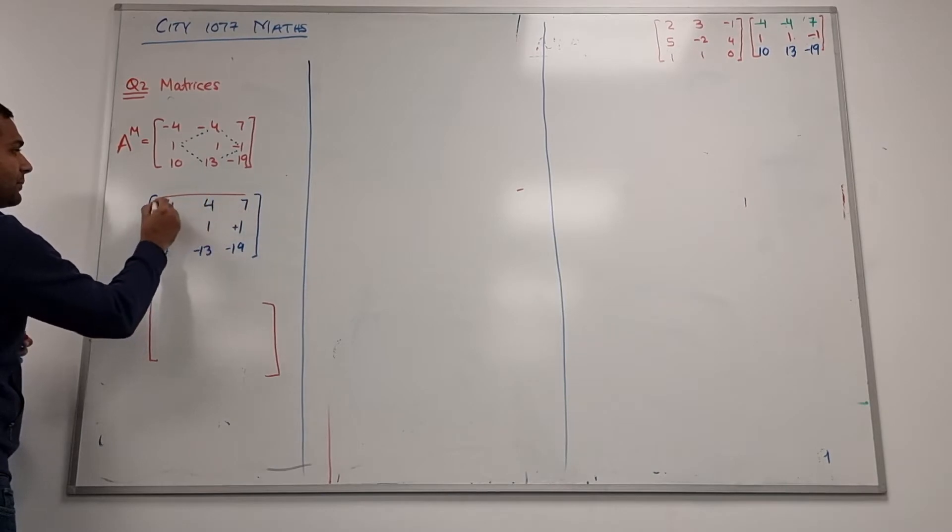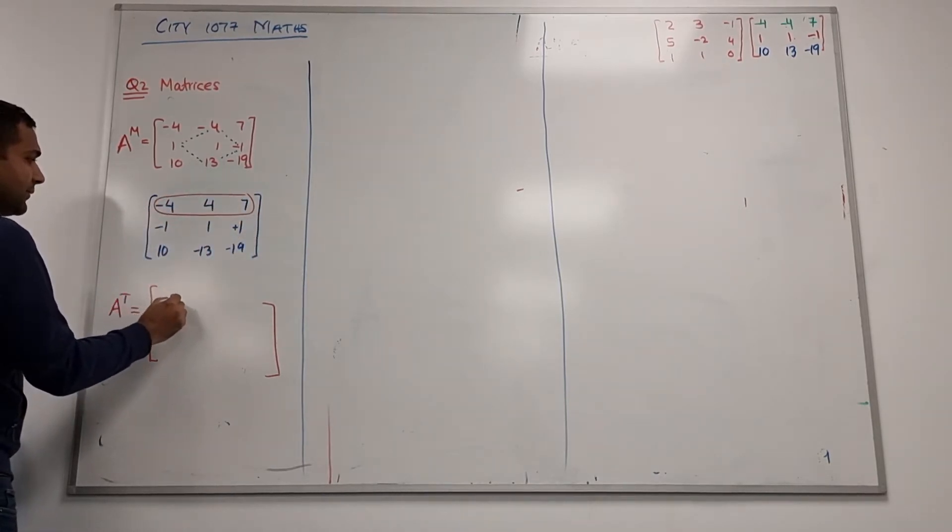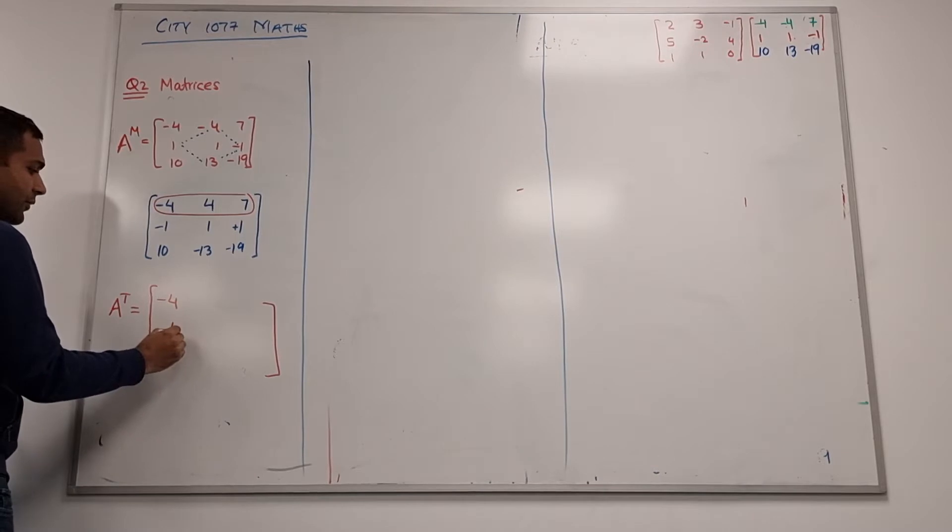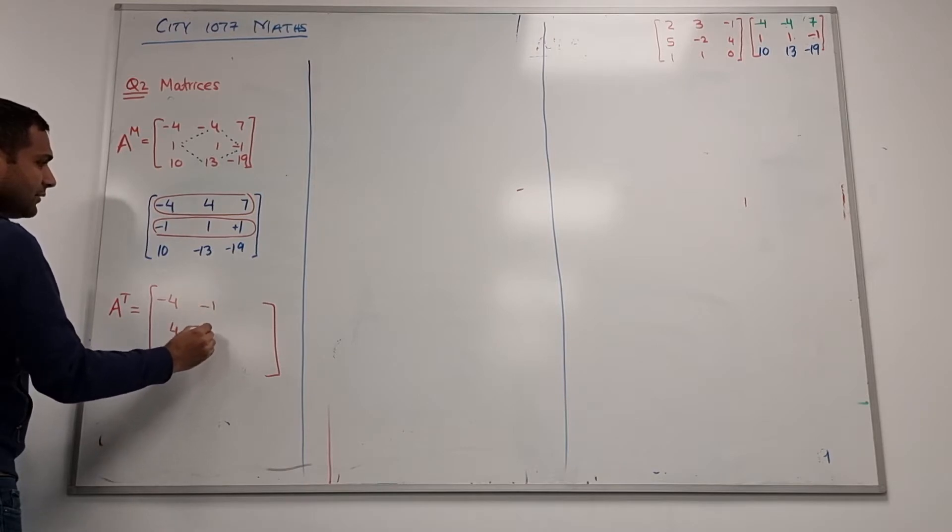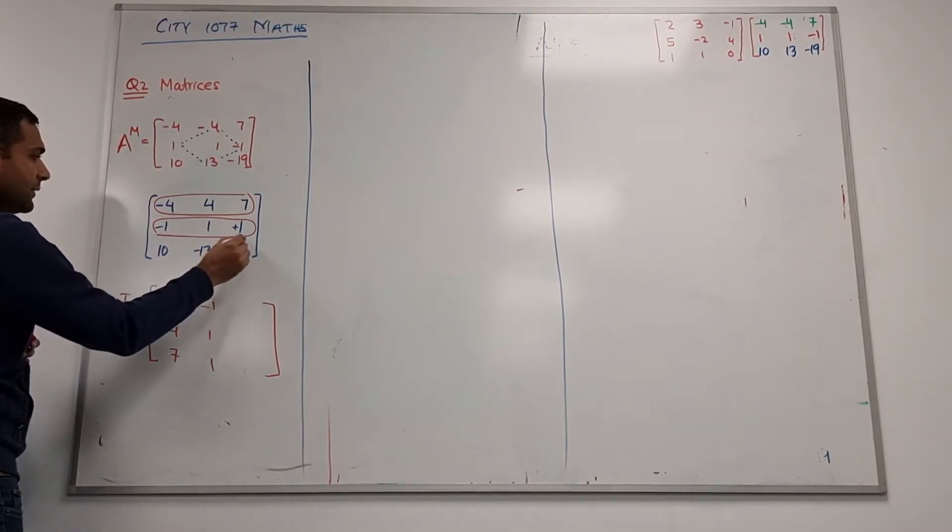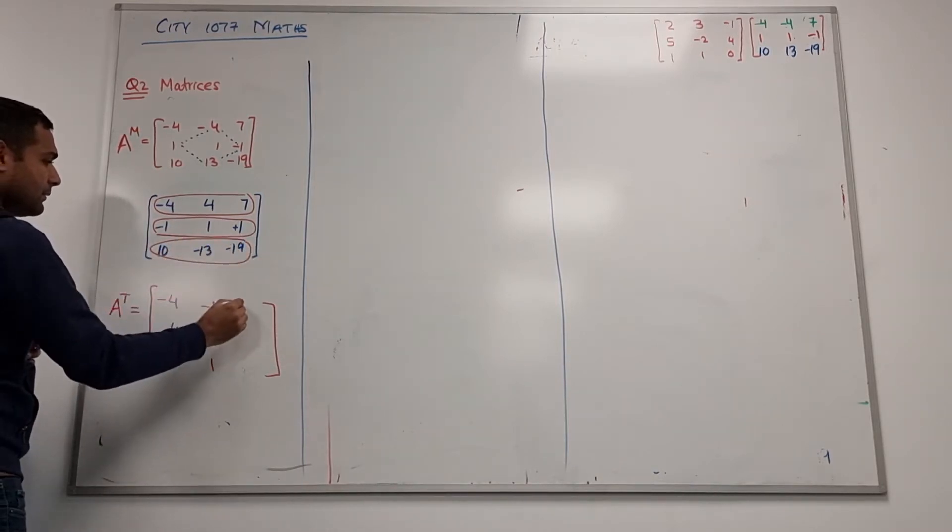Transpose is converting rows into columns. So this row I convert into column: minus 4, 4, 7, and then second one minus 1, 1, 1, third one 10, minus 13, minus 19.